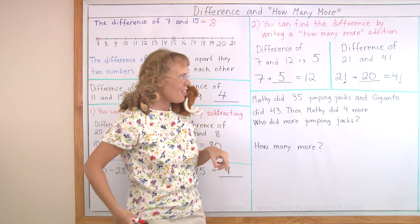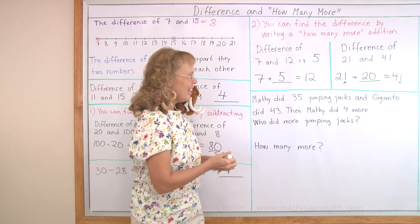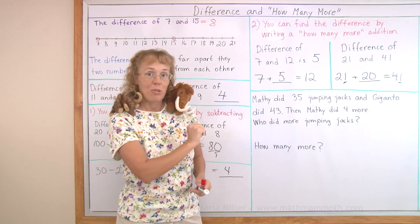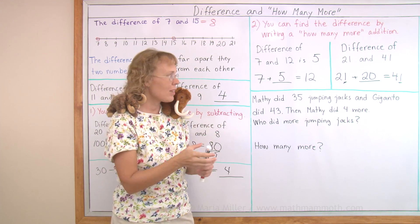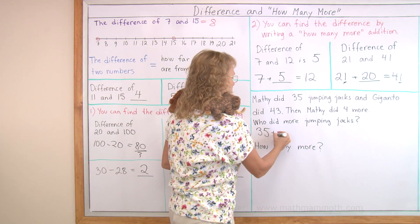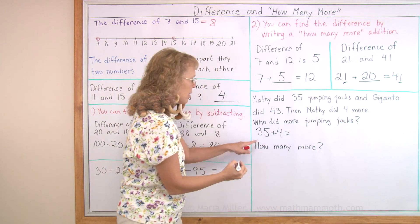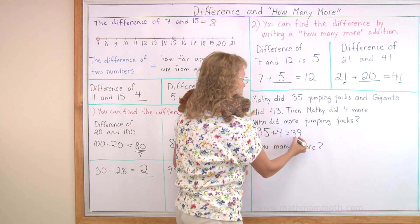So Mathie did 35, Giganto did 43, and then Mathie did 4 more. You were trying to catch up. How many did Mathie do, then? How many jumping jacks did Mathie do? He did 35, and then he did 4 more. So let's solve that. 30, 5, 4. 5 plus 4 is 9, so we get 39.